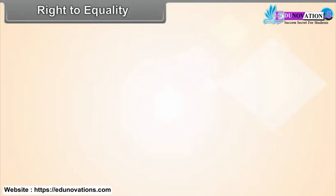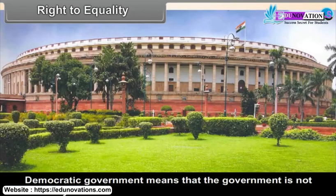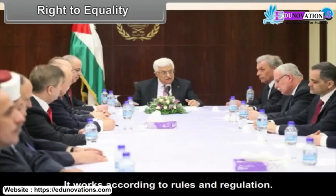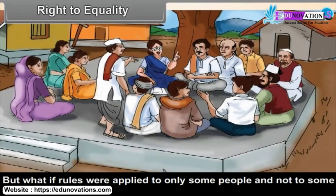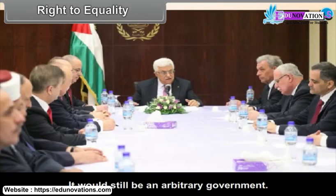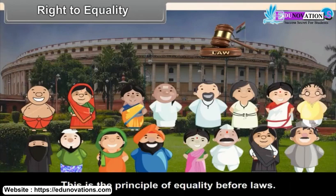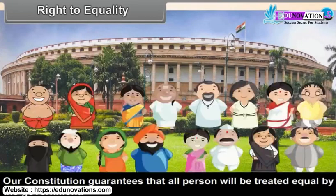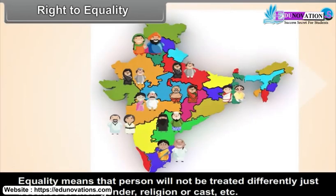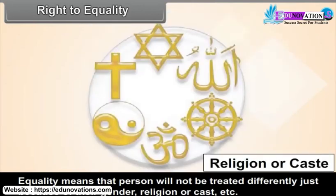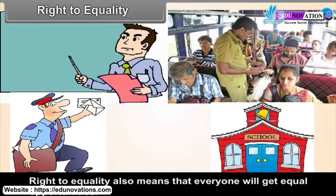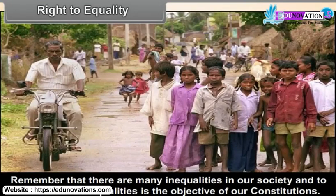Right to Equality. Democratic government means that the government is not arbitrary — it works according to rules and regulations. But what if rules were only applied to some people and not to others? It would still be an arbitrary government. Therefore, there must be the same rules for everyone. This is the principle of equality before laws. Our Constitution guarantees that all persons will be treated equally by the government. Equality means that persons will not be treated differently just because of their gender, religion, or caste. Right to equality also means that everyone will get equal opportunities. There are many inequalities in our society and to remove those inequalities is the objective of a constitution.